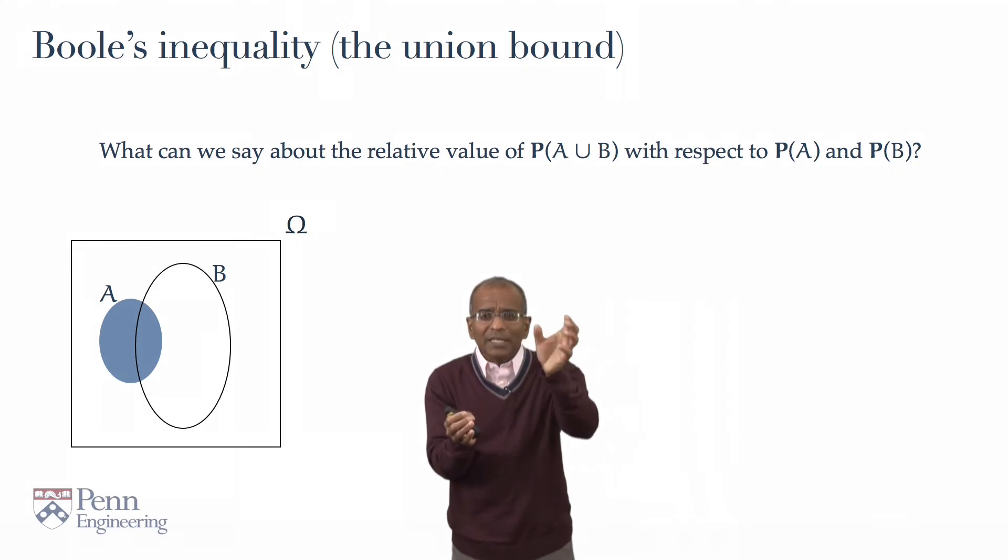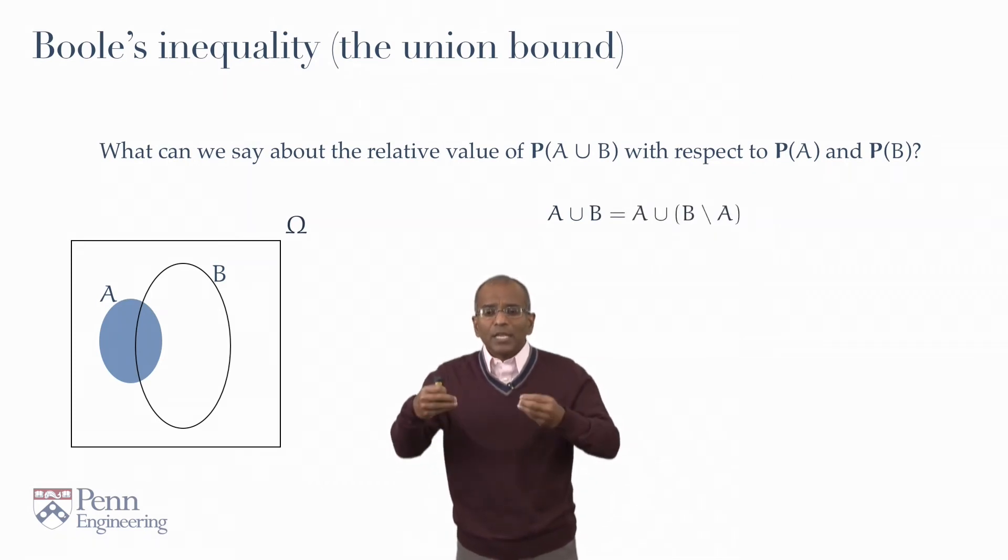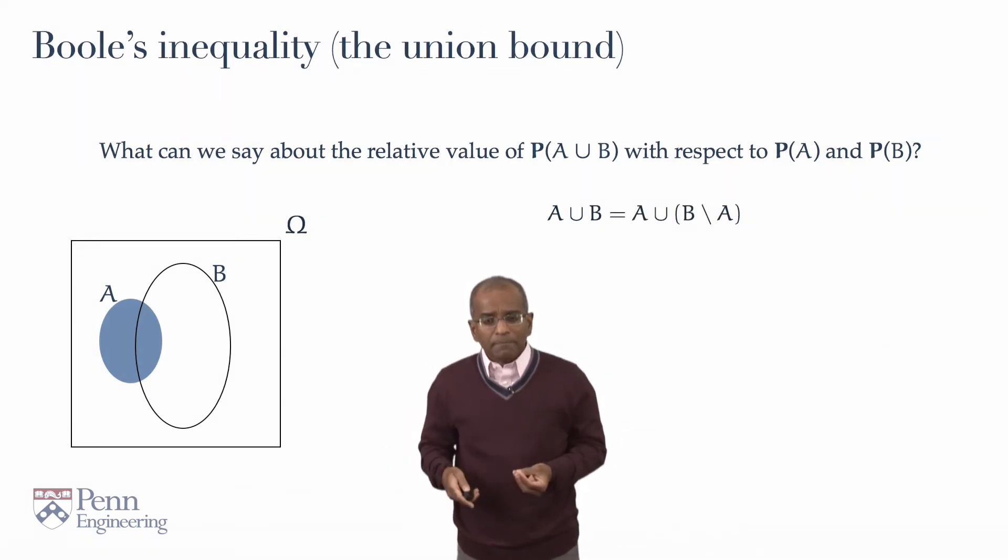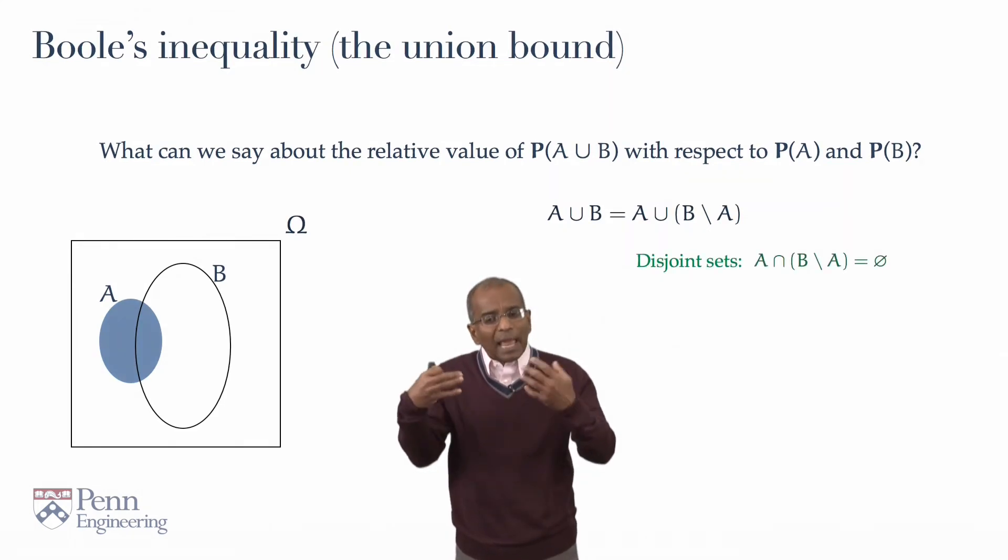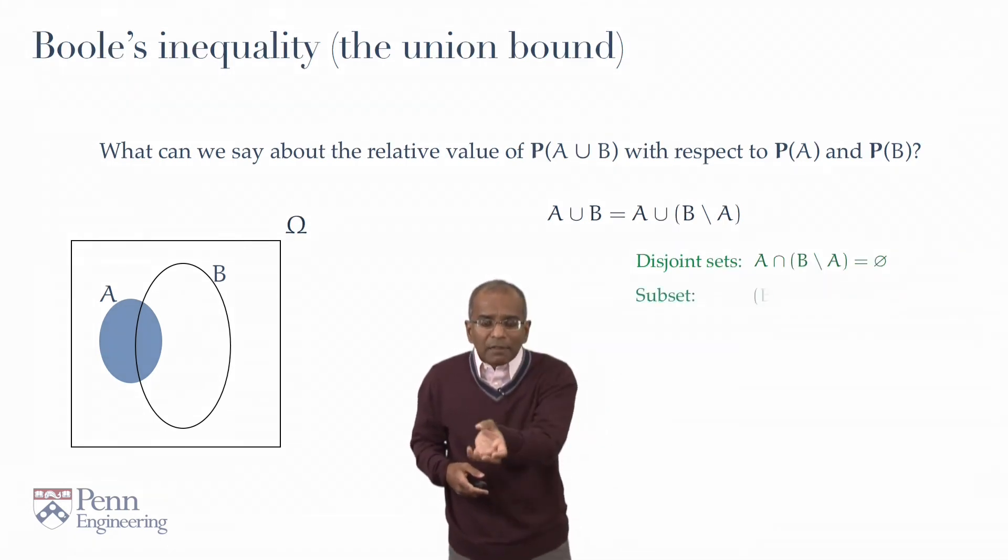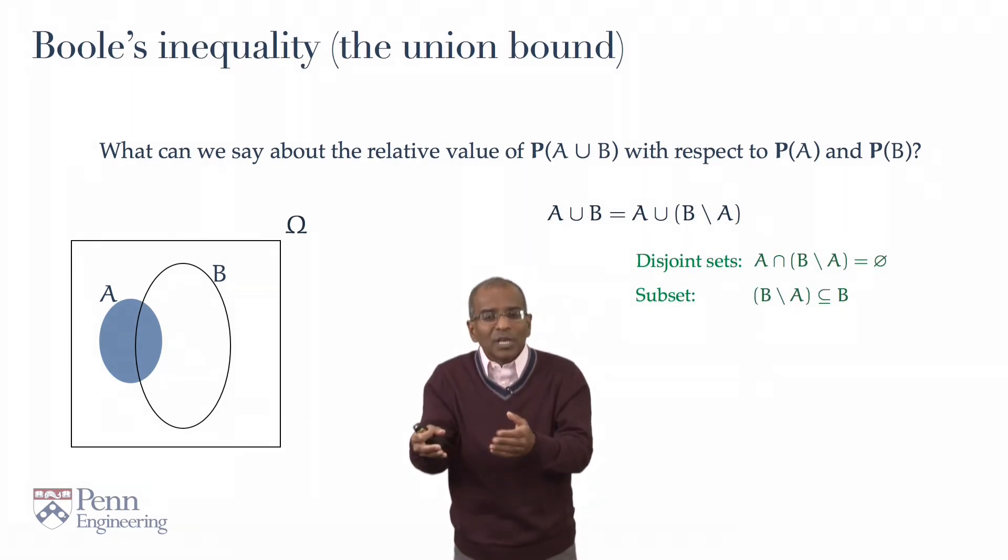And what is left out? Well, it's that sliver, that crescent, B minus A. And therefore, we decompose A union B as A together with B minus A. Now, by the construction, it is clear that A and B minus A share no elements. In other words, their intersection is empty. They are disjoint sets. And by construction, it's apparent that B minus A, that sliver, is a subset of B. What we have thrown out is, of course, what is common to A and B, the intersection of A and B.